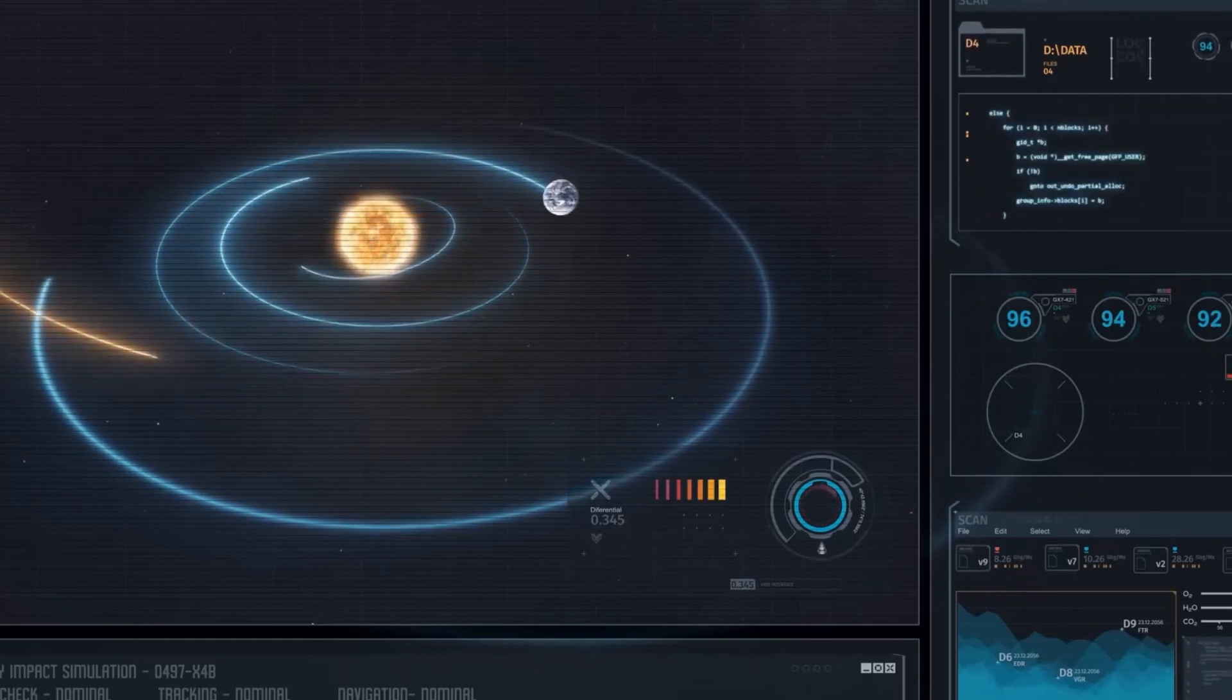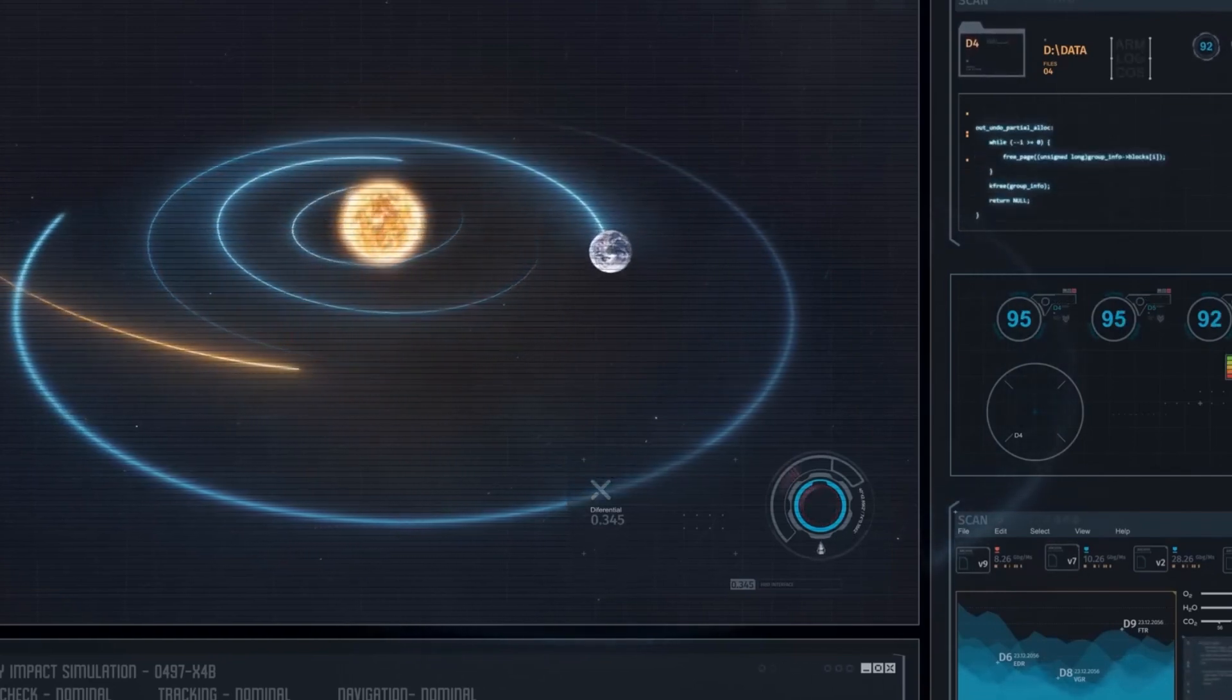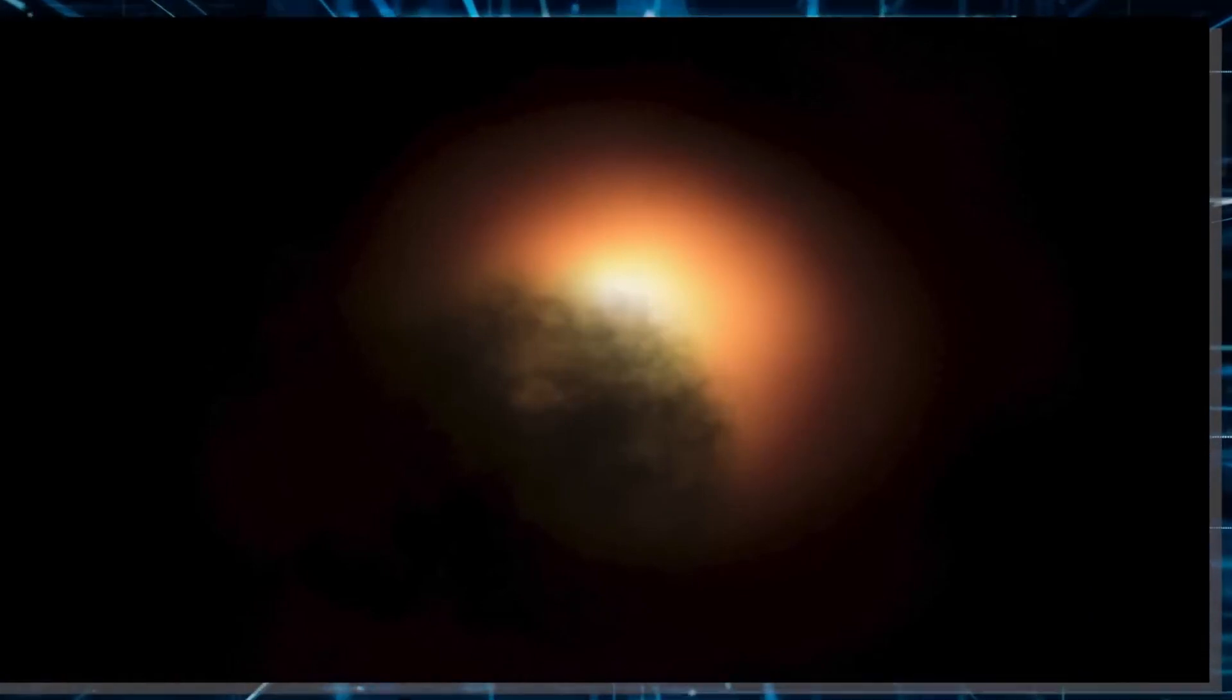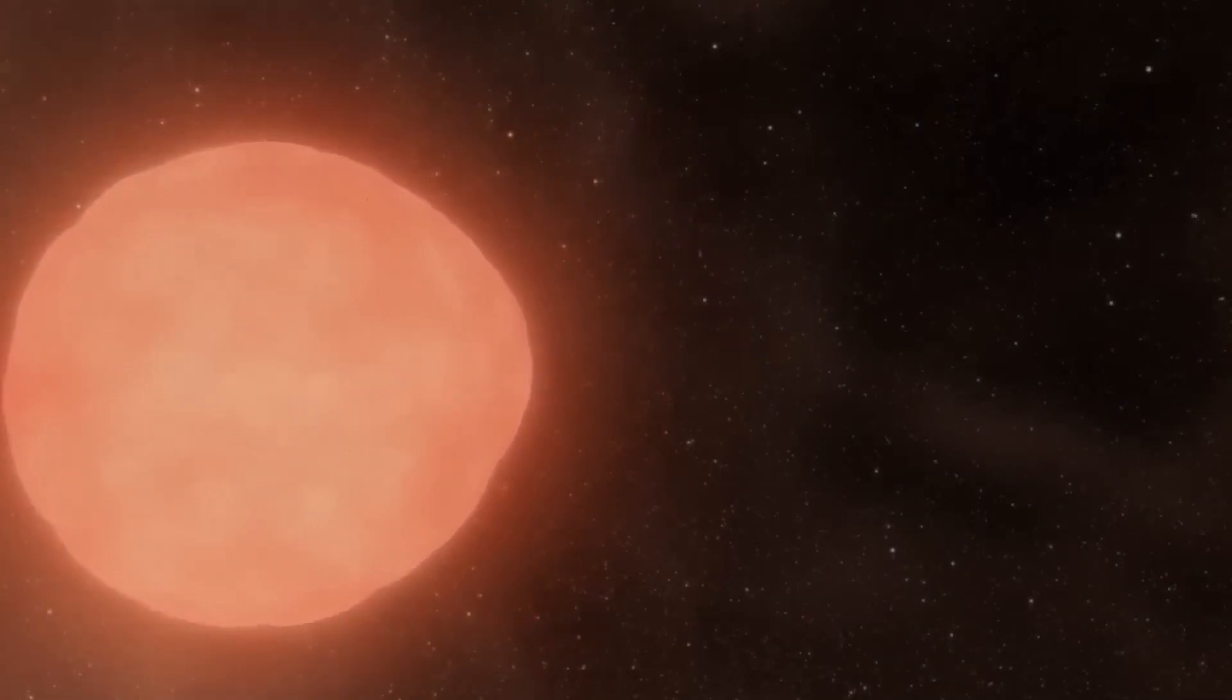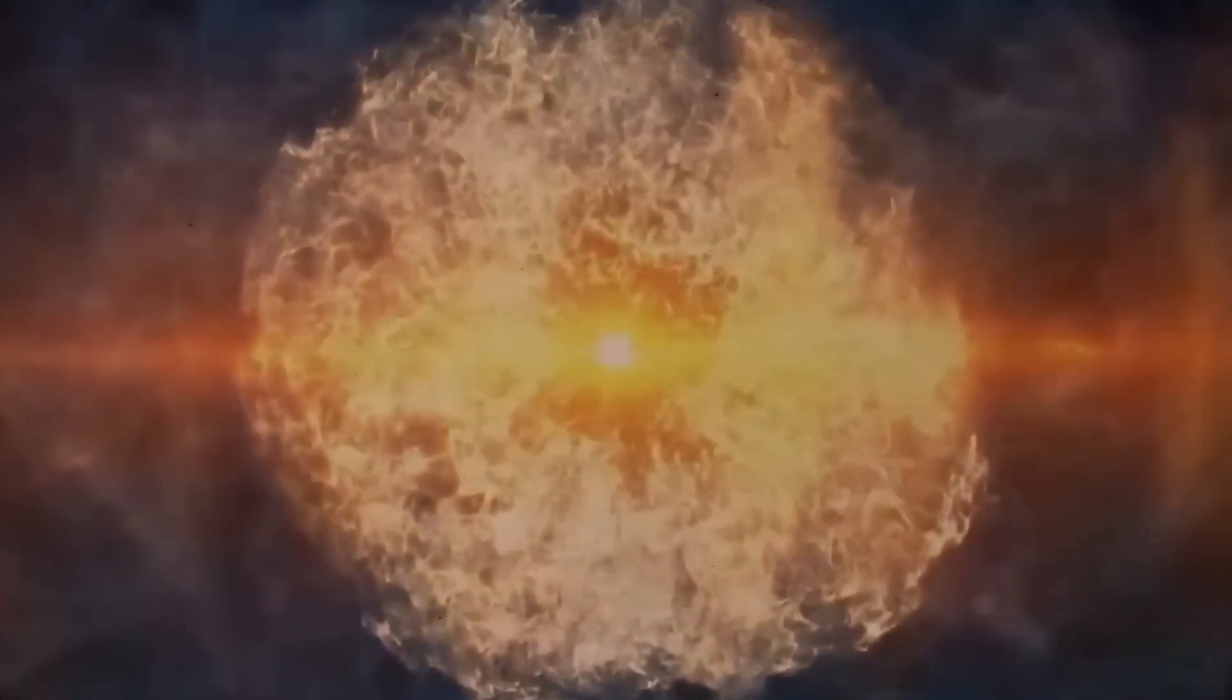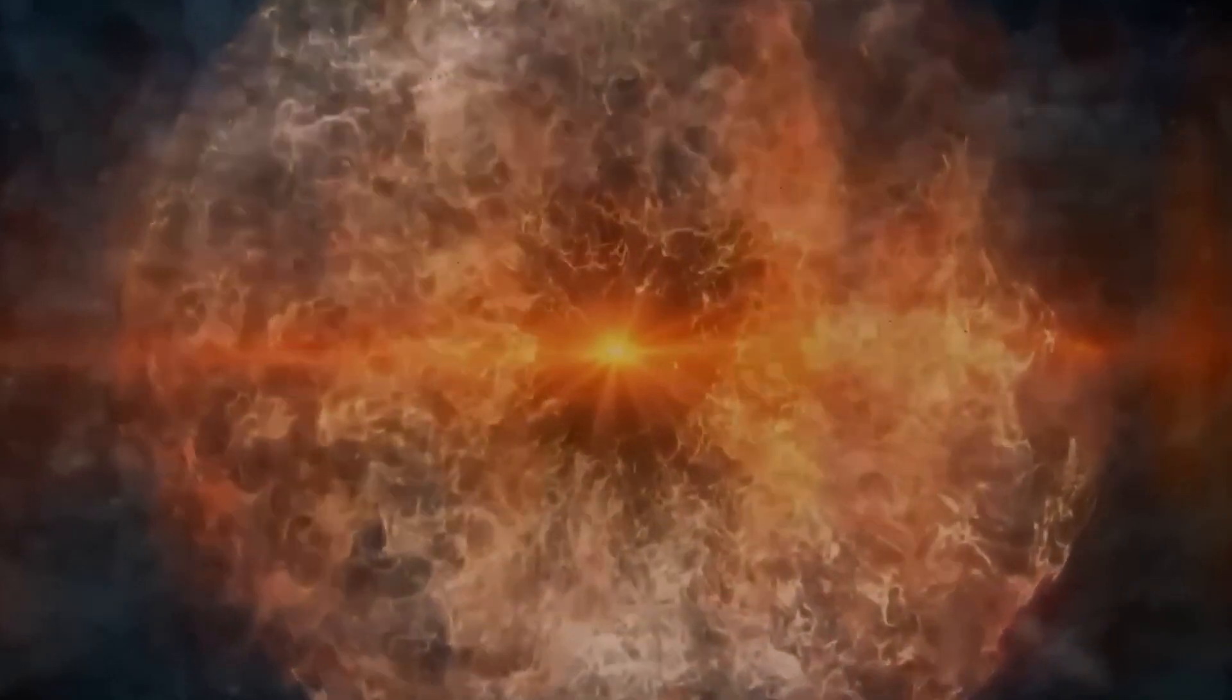This red glow is due to Betelgeuse's relatively cooler surface, about 3,500 Kelvin, compared to the sun's 5,500 Kelvin. Despite its cooler temperature, Betelgeuse is nearing the end of its life, which is why scientists are watching it closely.